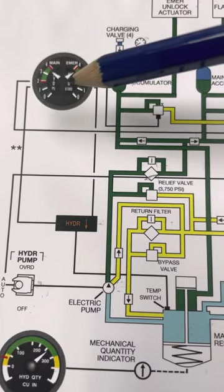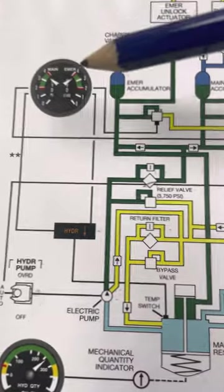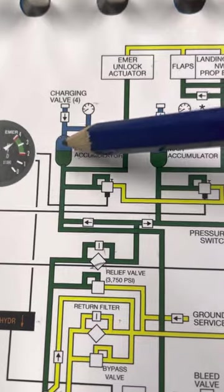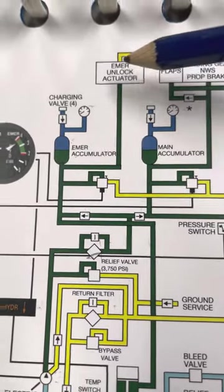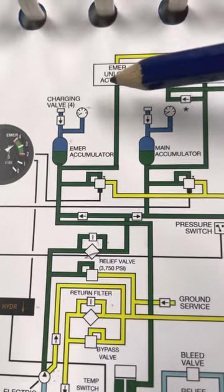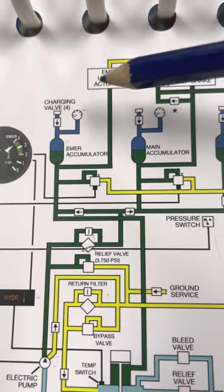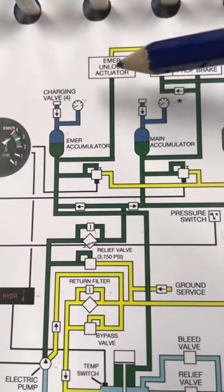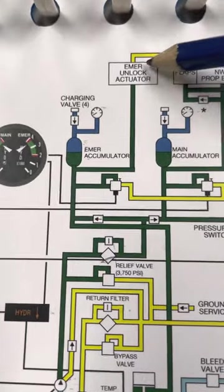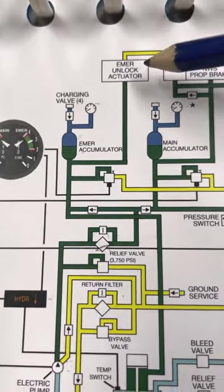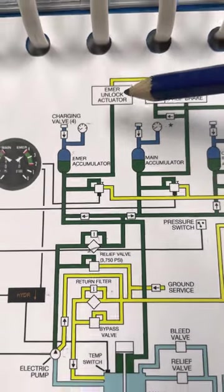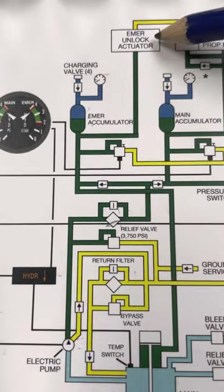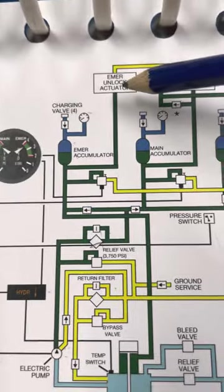Now, that emergency gear extension handle actuates residual pressure from the emergency accumulator to apply power to the uplocks with explosive bolts to allow the landing gear. It opens the doors and allows the landing gear to free fall. It both explodes the bolts to open the doors as well as use residual pressure from the emergency accumulator to actually release the uplock.